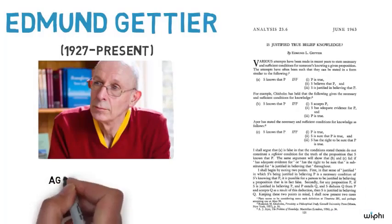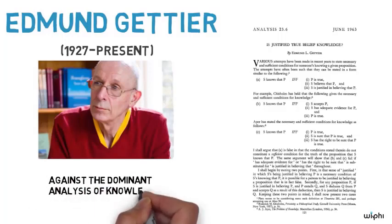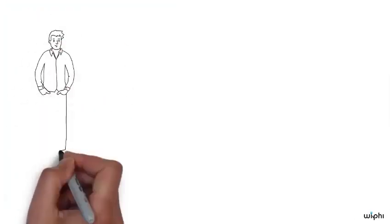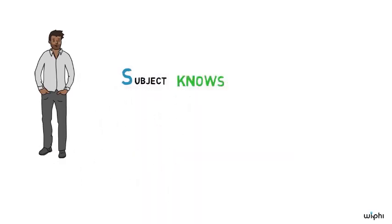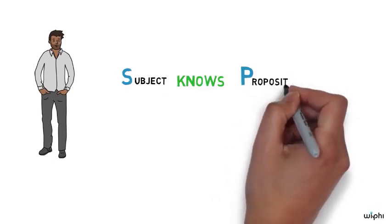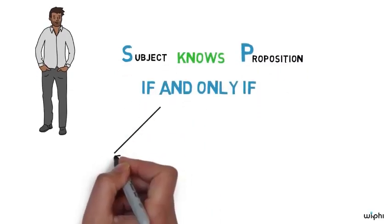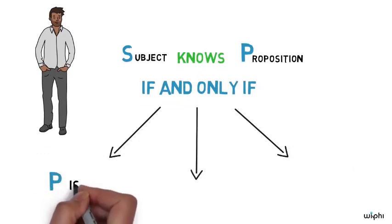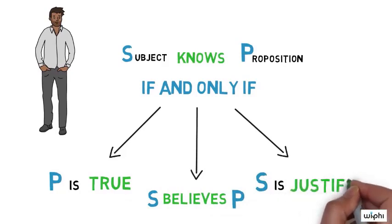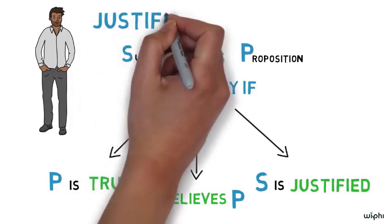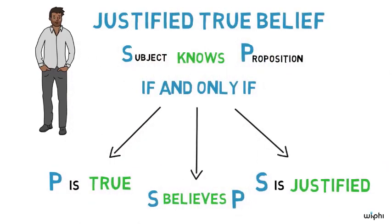In his paper, Gettier sets out to attack the dominant theories of knowledge of his day, which were committed to a three-part analysis or definition of knowledge. According to this analysis, a person or subject, conventionally called S, knows a proposition P if and only if the following three conditions all hold: P is true, S believes that P, and S is justified in believing that P. This three-part recipe is known as the JTB, or justified true belief, analysis of knowledge.